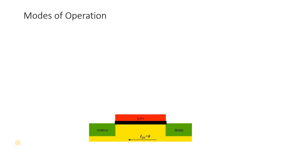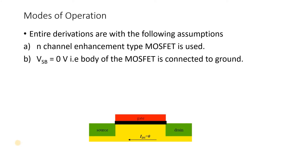As far as modes of operation are concerned, we are going forward for derivations. Before we derive anything, there are certain assumptions to be made. The first assumption is that the MOSFET we are going to use for derivation is n-channel enhancement type. Also, the body of the MOSFET is connected to ground. Since MOSFET is a 4-terminal device, both source and body are connected to ground, so VBS is equal to 0.